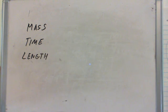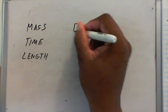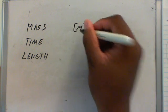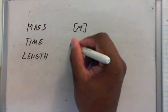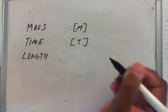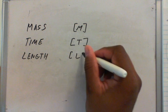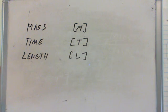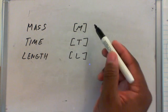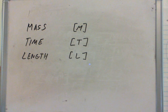These are denoted mass is denoted by capital M in brackets, time is capital T in brackets, and length is capital L in brackets. These three are the fundamental dimensions.